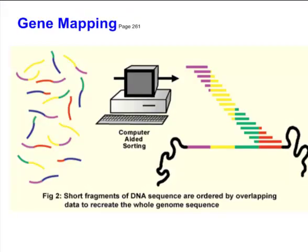We also have the ability now to do what's called gene mapping. We can take snippets of DNA — as you see over here in different colors — where each color represents a different gene, and with the help of some computing power we can start to sort these.